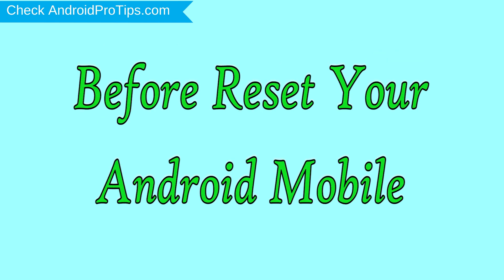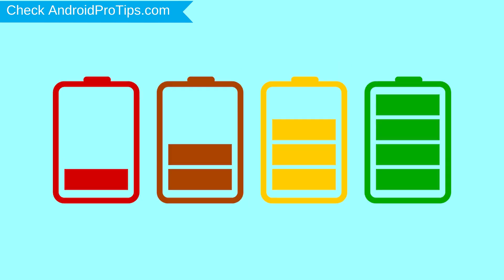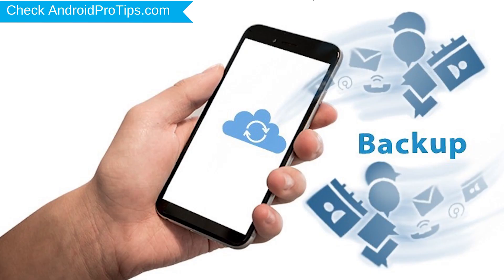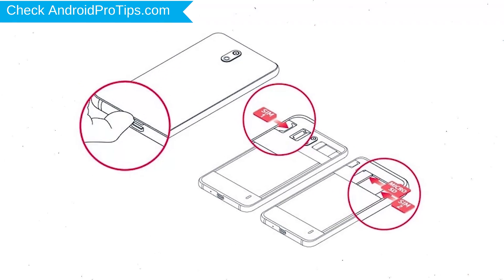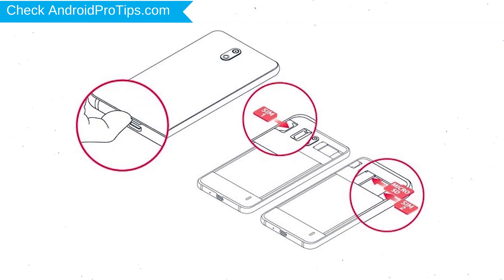Before resetting your mobile, charge your mobile if the battery is less than 50%. You need to make sure that the data on your device is backed up so you do not lose valuable photos or documents. Reset deletes all your mobile data, so you should back up all important data and remove SIMs and SD card.